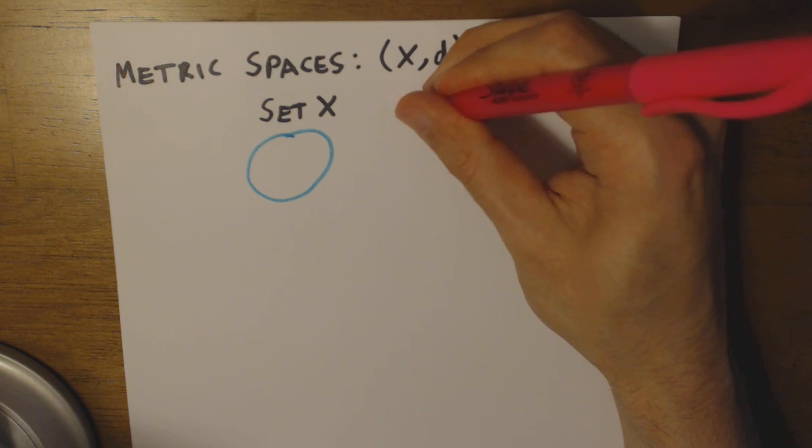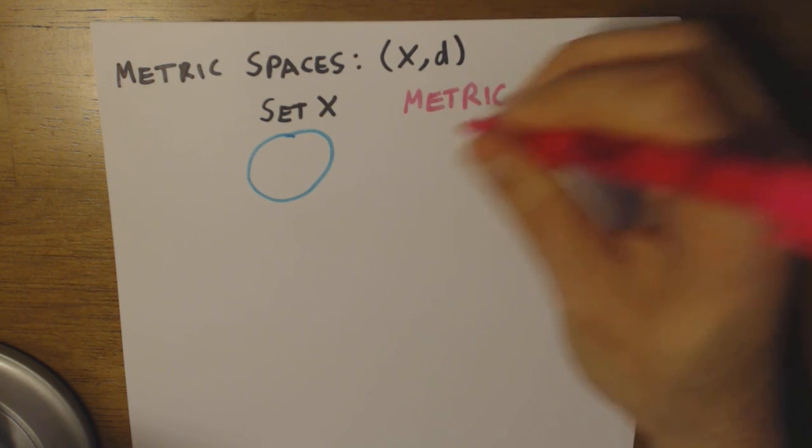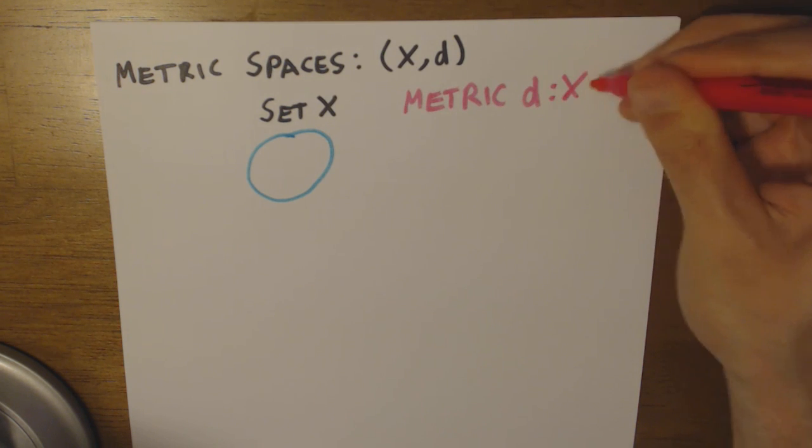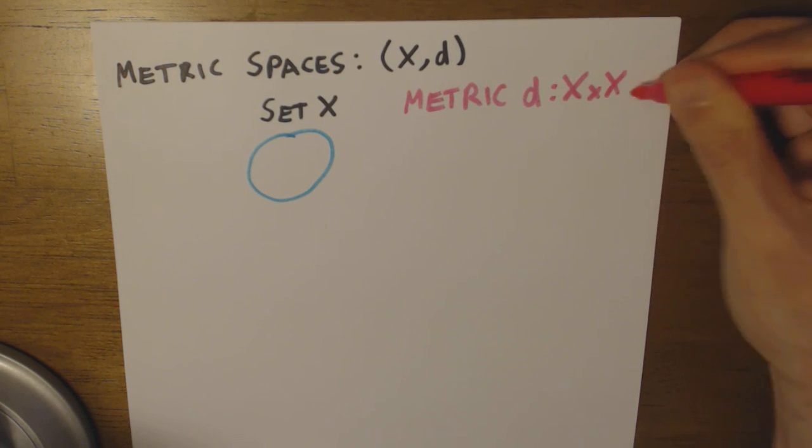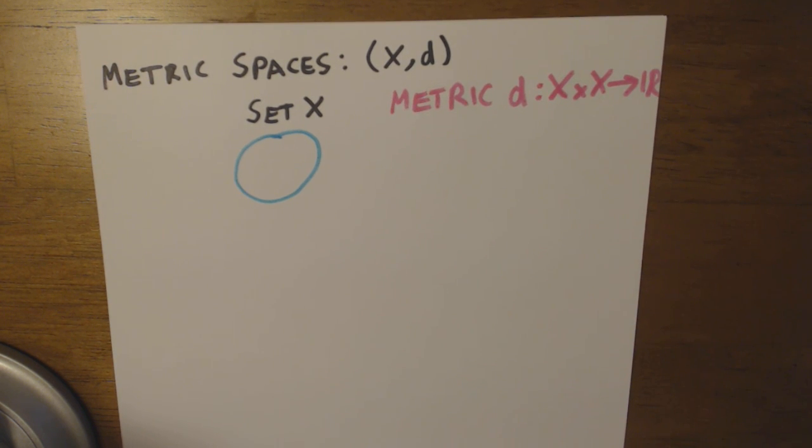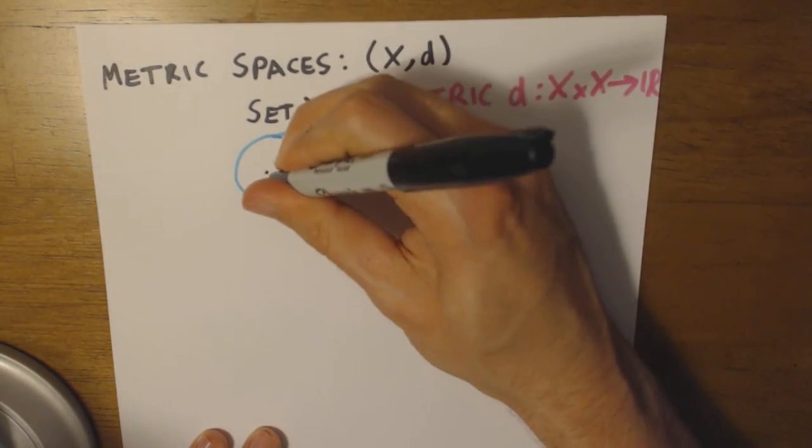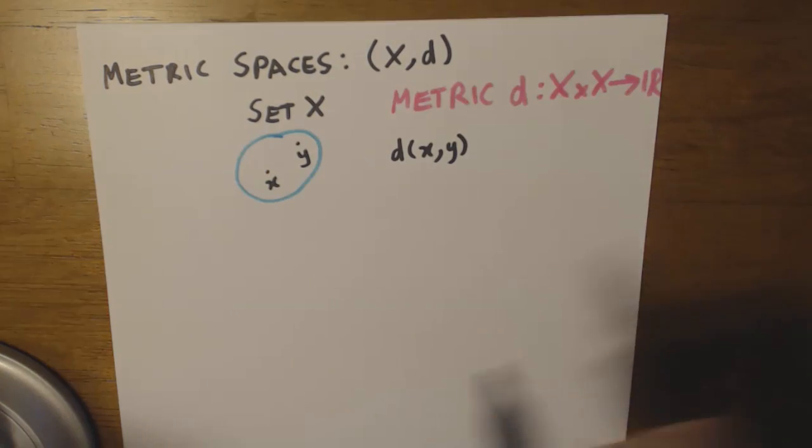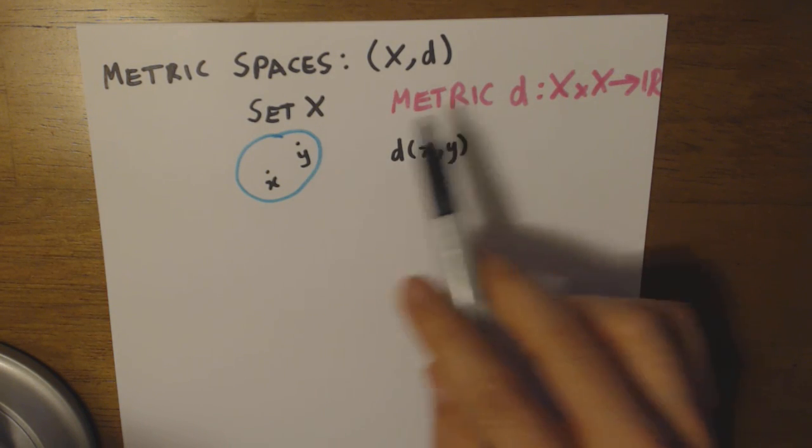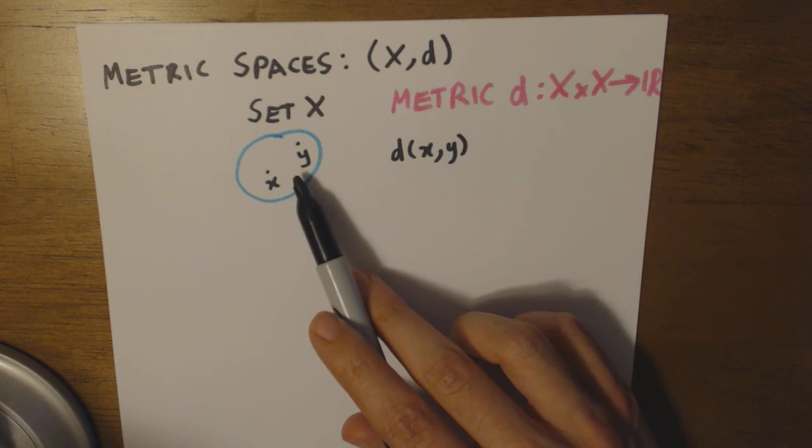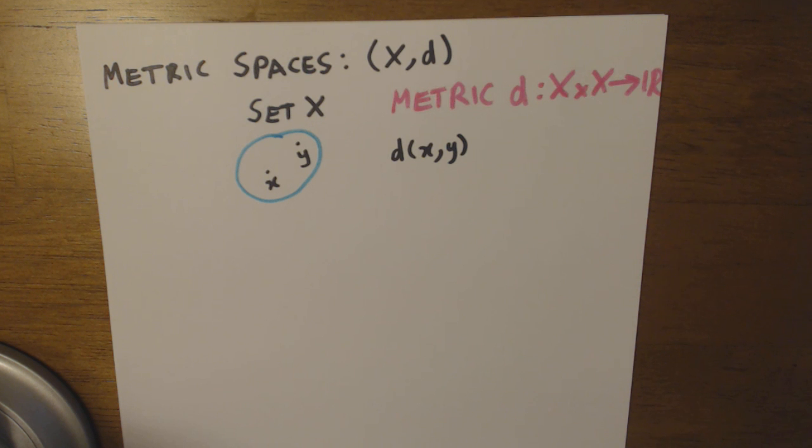So we have a metric which is a function d, which takes two points from a set X and maps it to one real number. A metric d is also called a distance function. If we choose any two random points in a set X, the distance between them is determined by the metric d, which takes these two points, two elements of set X, and maps them to a real number, which we call the distance between the two points.